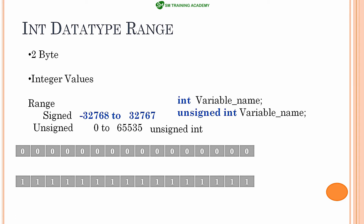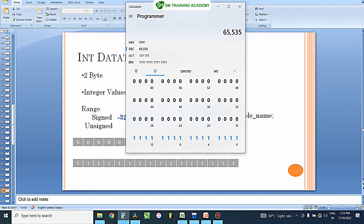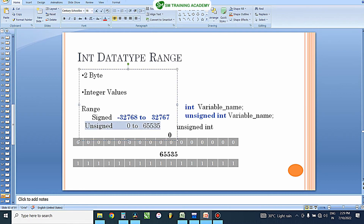Let us check what these two numbers are. The minimum is zero, as all zeros is 0 in decimal. All ones in a 16-bit data type is 65,535, which is the maximum value that can be stored in the unsigned int data type. This is how these values are arrived at for both signed and unsigned versions of the int data type.